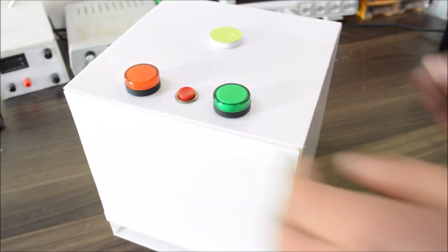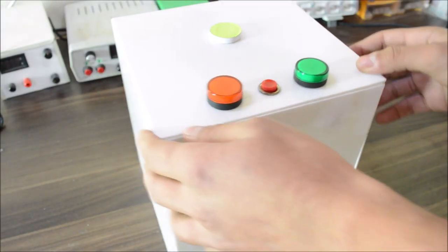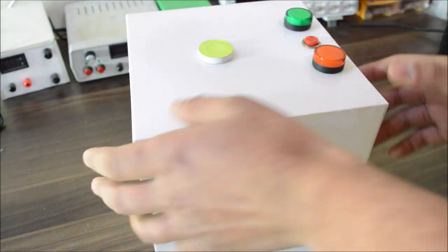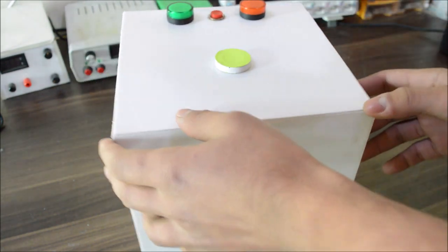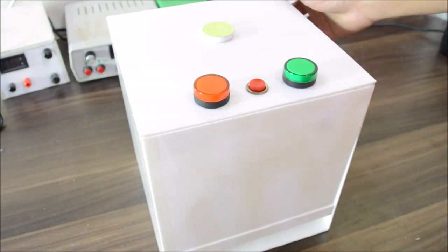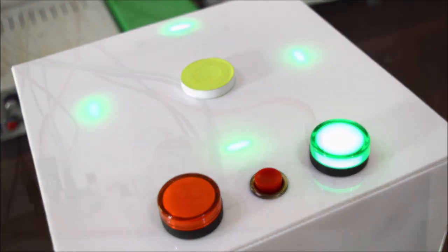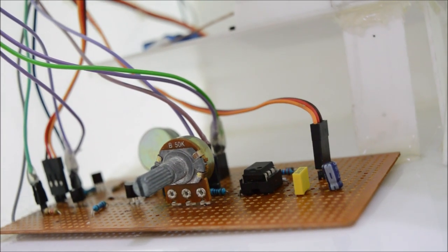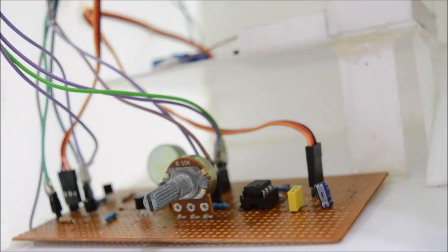This intriguing looking box you're looking at is actually a vending machine, or you can say a miniature arcade game, which you can play and if you're lucky enough you can get a candy out of it. So in this video I will give you a complete demonstration of this game and also explain you the working of the circuit.